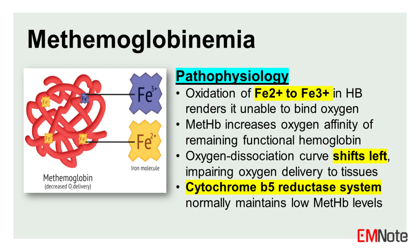This oxidation renders the hemoglobin molecule incapable of binding and transporting oxygen effectively. The presence of methemoglobin not only reduces oxygen-carrying capacity but also increases the oxygen affinity of the remaining functional hemoglobin, resulting in a left shift of the oxygen dissociation curve. This shift further impairs oxygen delivery to tissues, exacerbating tissue hypoxia.